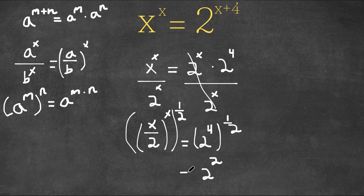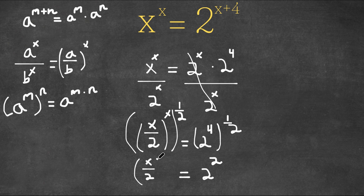And for our left side here, x times 1 half is simply just x over 2. So we would have x over 2 to the power of x over 2.